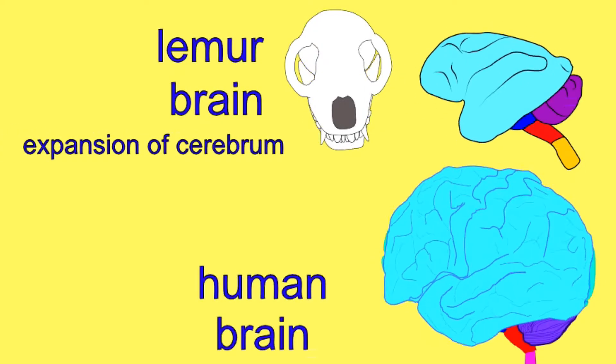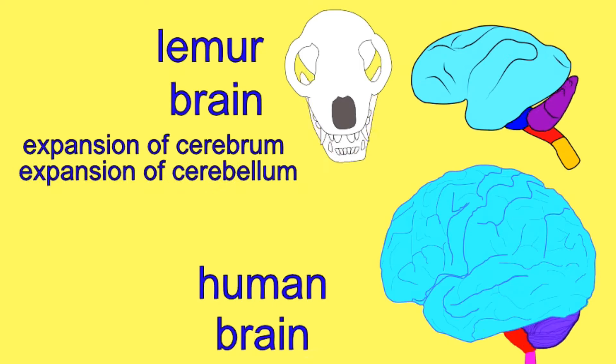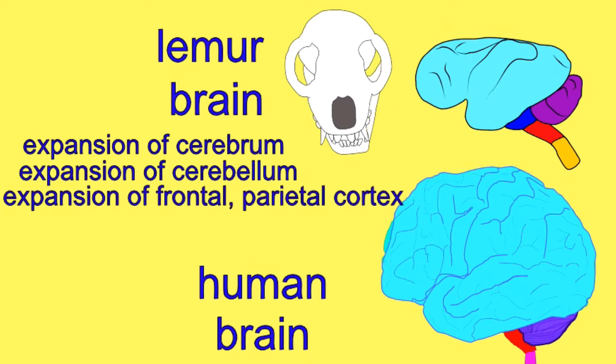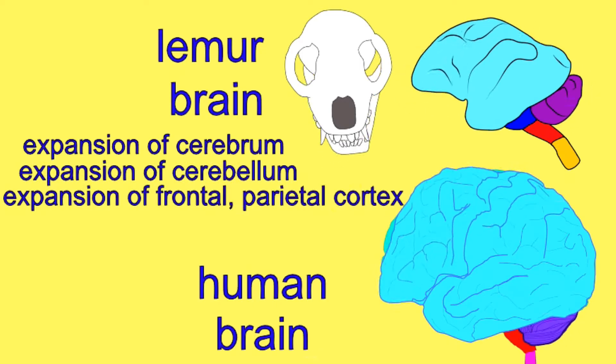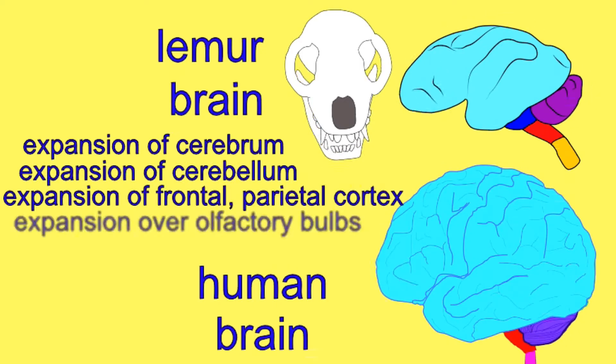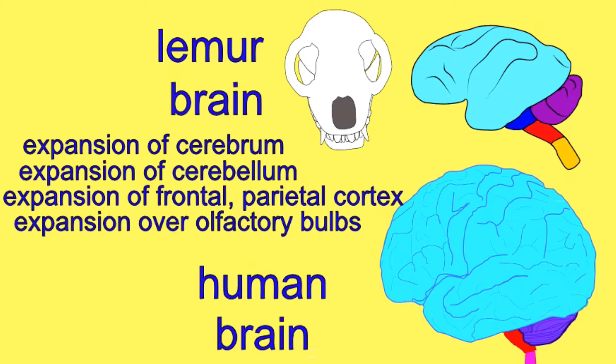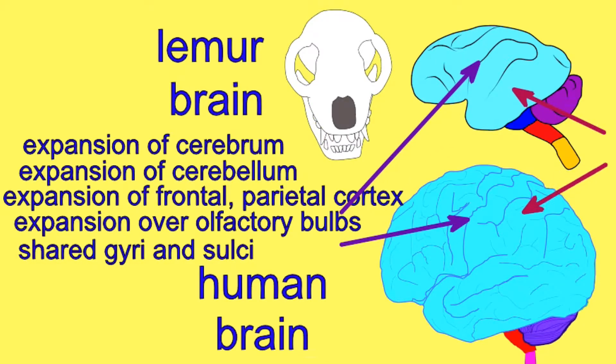The early primates expanded the neocortex further, so much so that it covered most of the paleocortex and olfactory bulbs. There were shared folds and regions, including Broca's area,